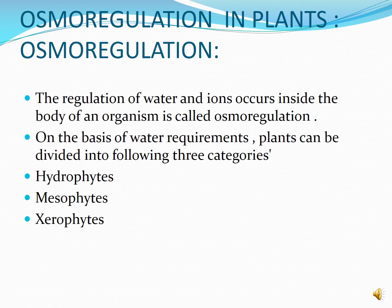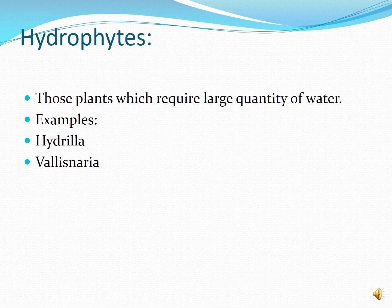Now we will move to the next topic: osmoregulation in plants. Osmoregulation is the regulation and balancing of water occurring inside the body of an organism. On the basis of water requirements, plants can be divided into three categories: hydrophytes, mesophytes, and xerophytes.